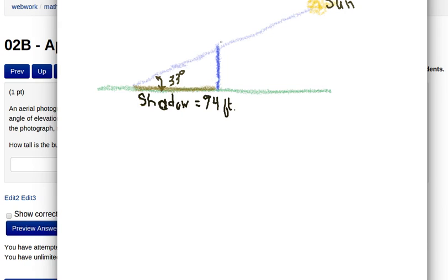Let me turn that off and get a right angle drawn in here. So we've got this right angle right here. We know that this is 33 degrees and we know that the shadow is 94 feet. So there we've got a right triangle situation.